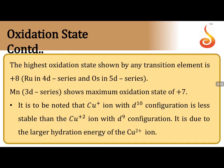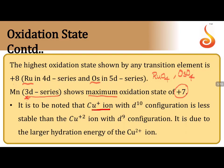Among all transition elements, ruthenium and osmium show the highest oxidation state of +8, as seen in RuO₄ and OsO₄. Manganese is the only 3d series element that can show the maximum oxidation state — this is a very key point. The only element in the 3d series showing the highest oxidation state is manganese, at +7.